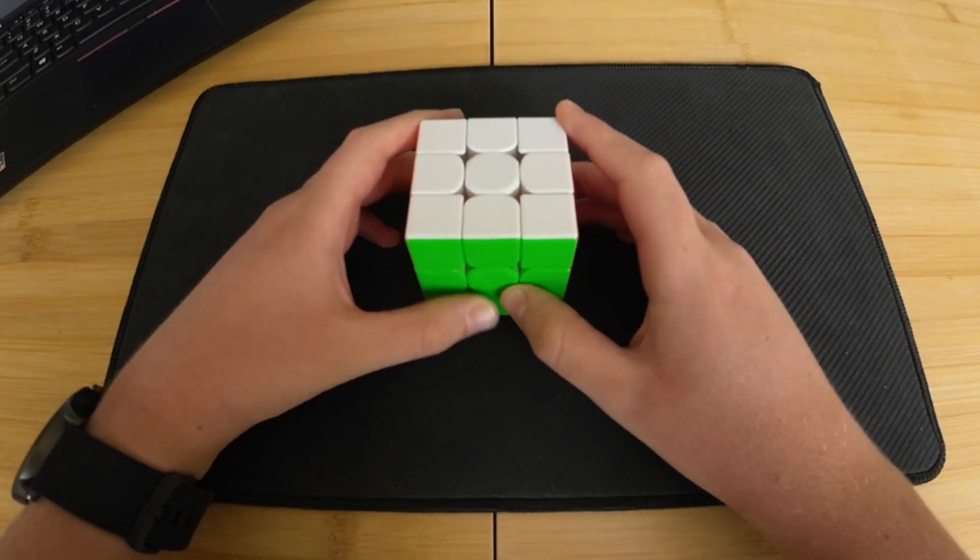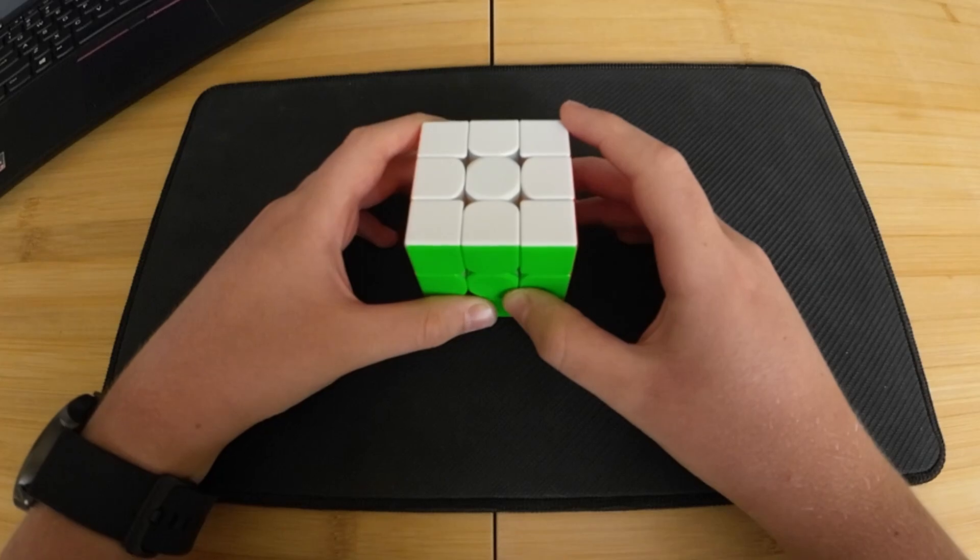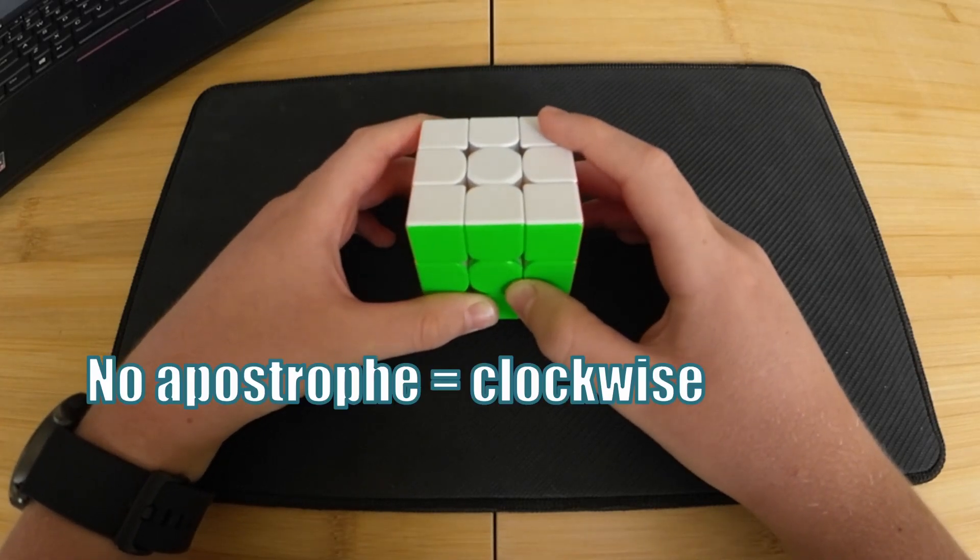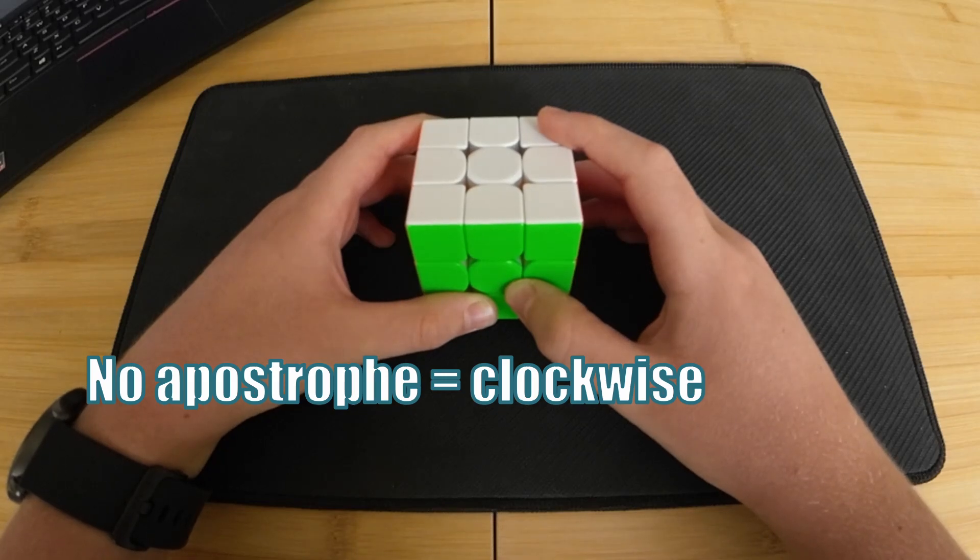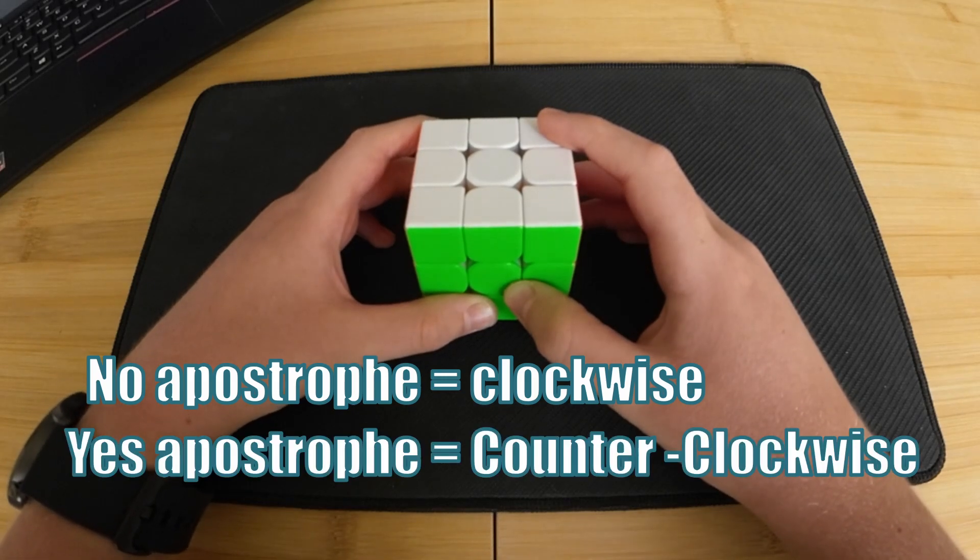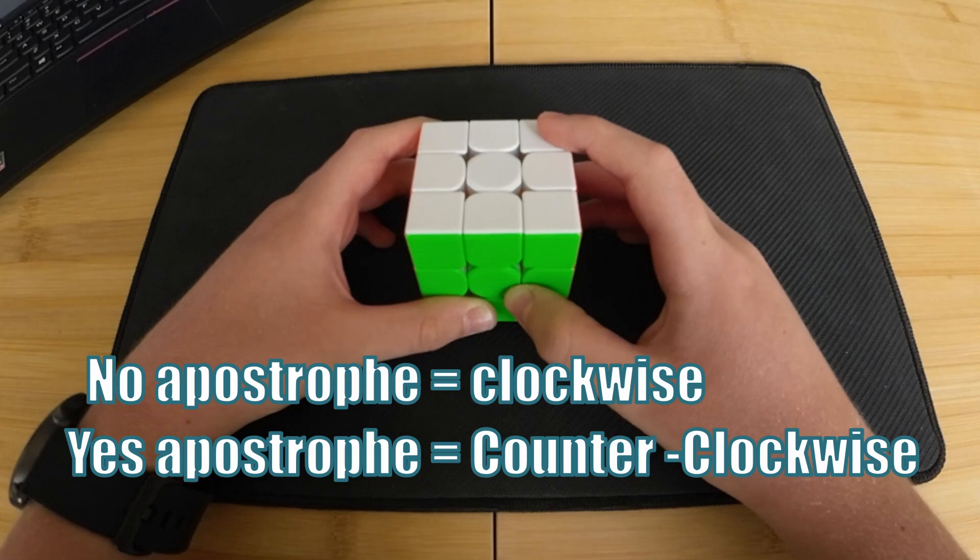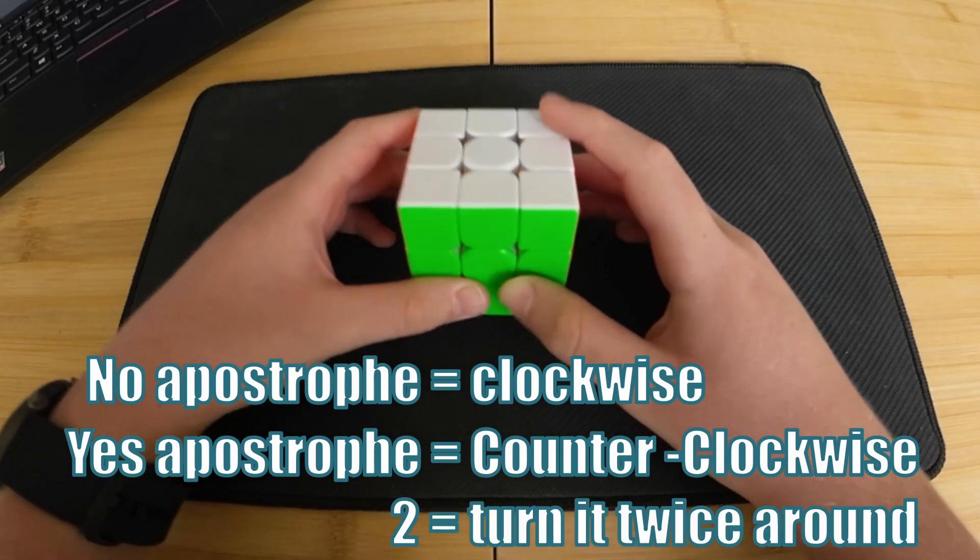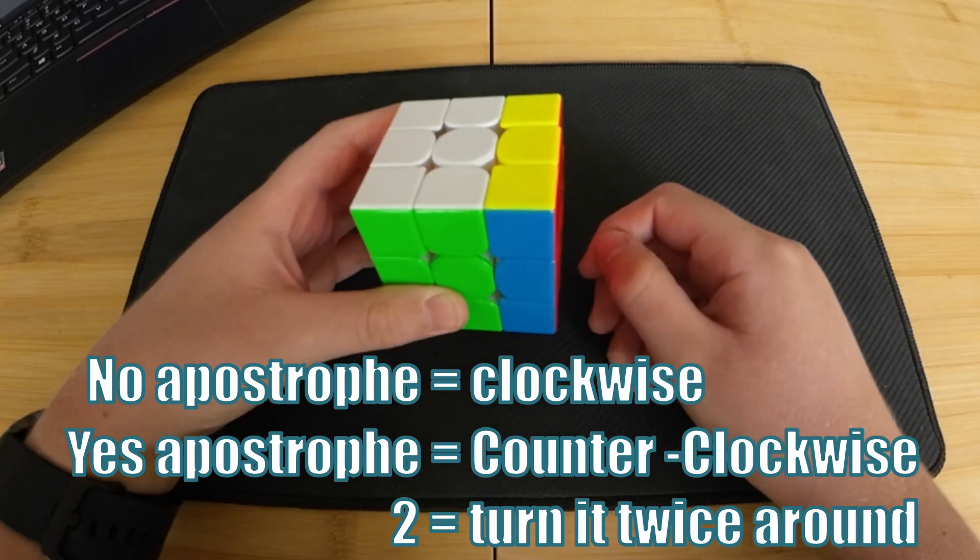The letter determines which face you are going to turn. If there is no apostrophe or prime, then that means you will do the turn clockwise. If there is an apostrophe, then you are going to do the turn counterclockwise. If there is a two, then you will turn it around 180 degrees, which is two turns all the way around.